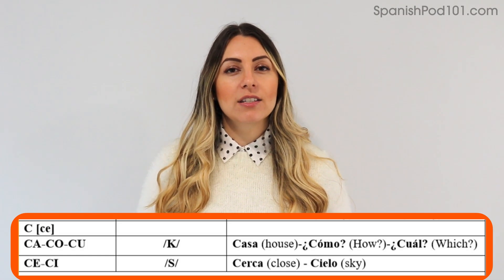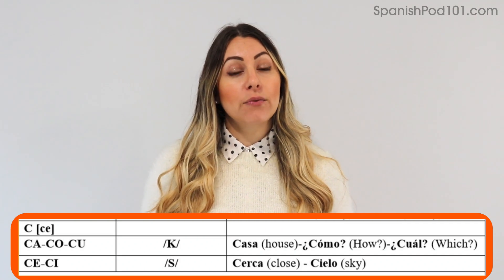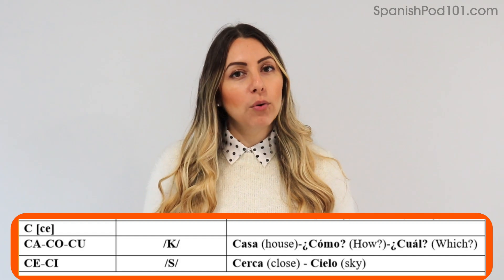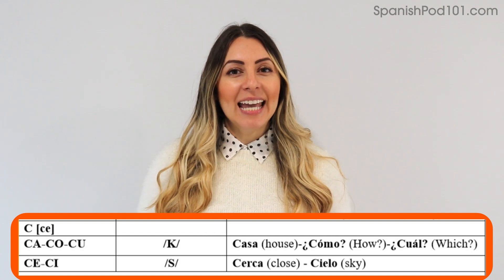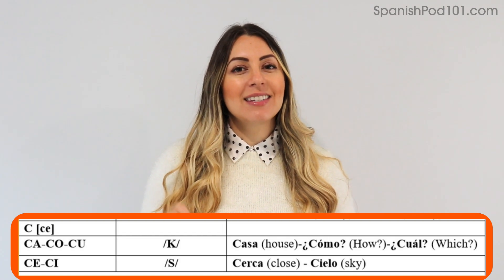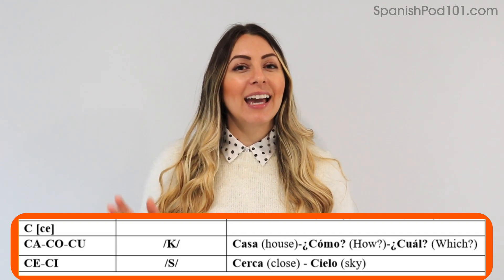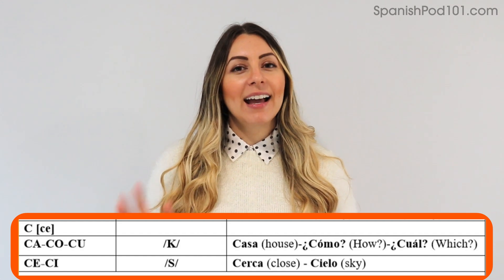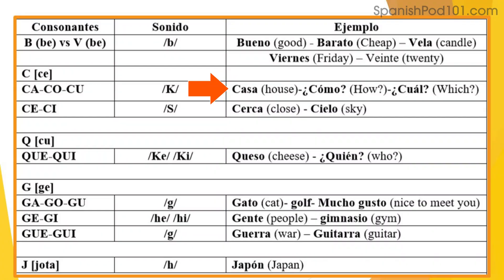The next one is C. The C will have a different sound in Spanish depending on which vowel comes after it. For C-A, C-O, C-U, the C turns into a hard C sound: ca, co, cu. For example: casa, como, cual. And if we have C-E or C-I, we pronounce the C with an S sound. For example: cerca, cielo.